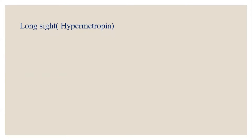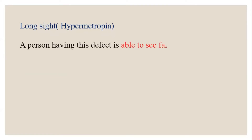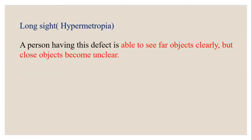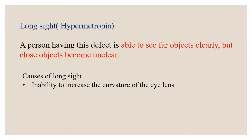A person suffering from long sight, or hypermetropia, can see far objects clearly but close objects become unclear. There are two causes: one is the inability to increase the curvature of the eye lens — if the curvature cannot be increased, light rays from a nearby object cannot focus well onto the retina. The second cause is the eyeball being too short.